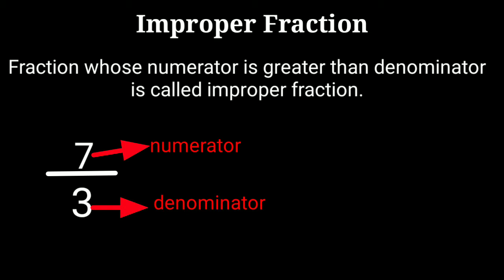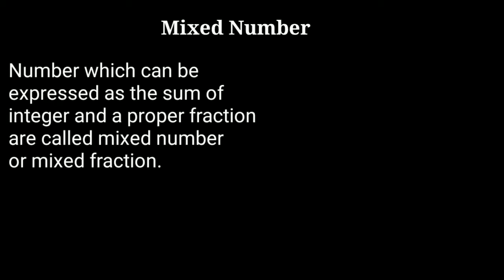Numerator number 7 is greater than denominator number 3. Therefore, this fraction is called improper fraction.